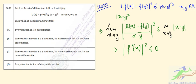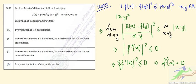Since a square is always non-negative, |f'(x)|² ≤ 0 implies f'(x)² = 0, so f'(x) = 0. Therefore the derivative is zero everywhere, and f(x) is a constant function.